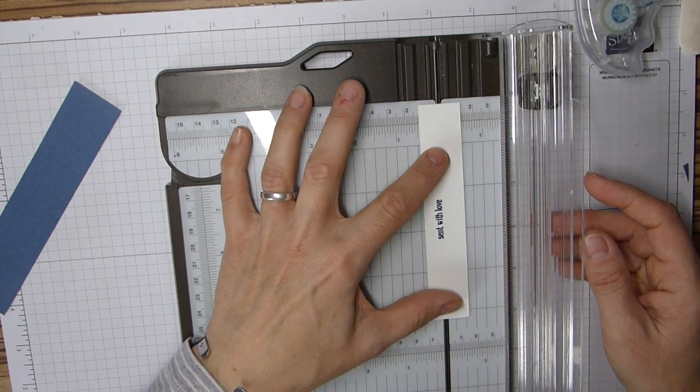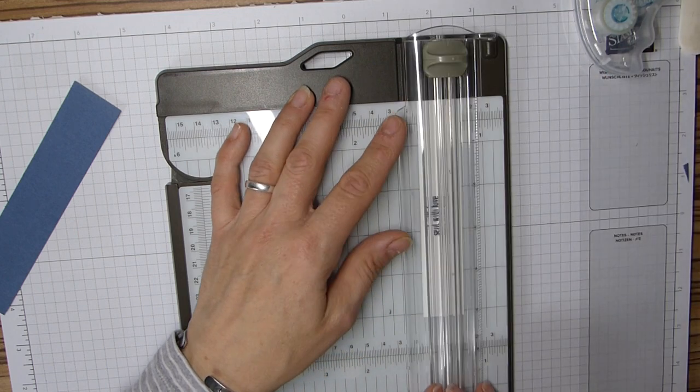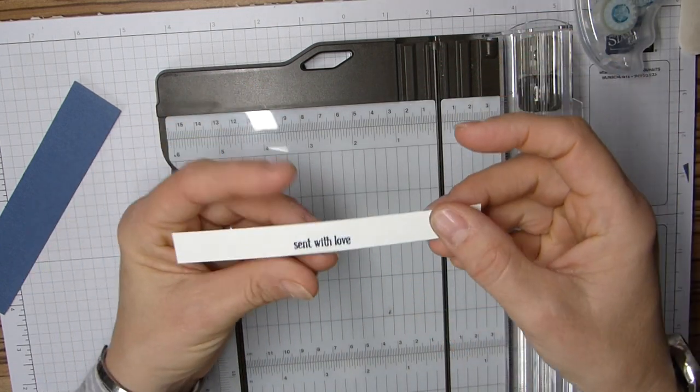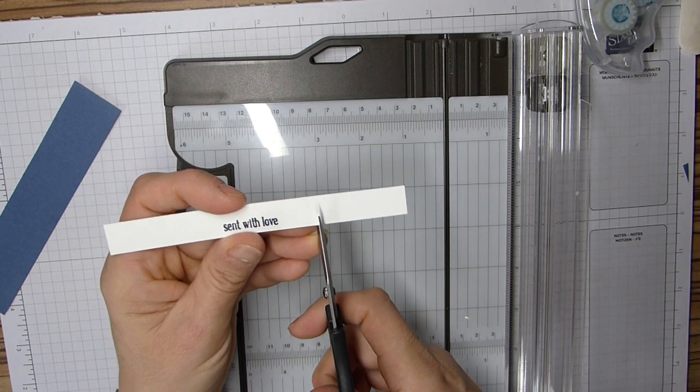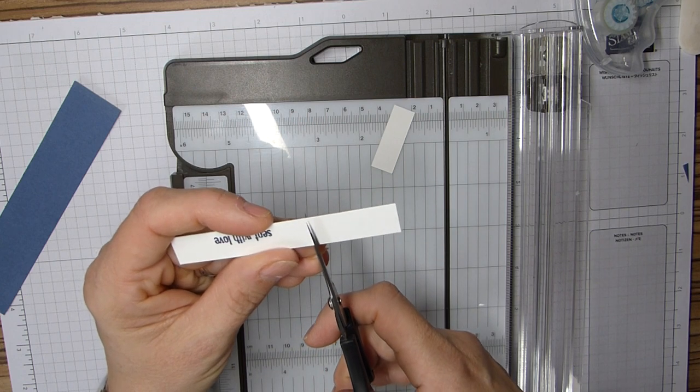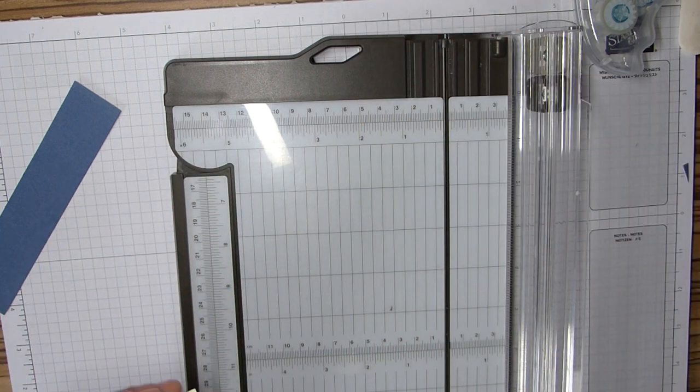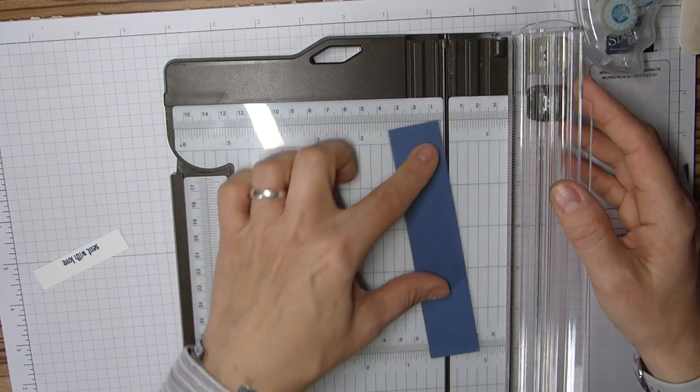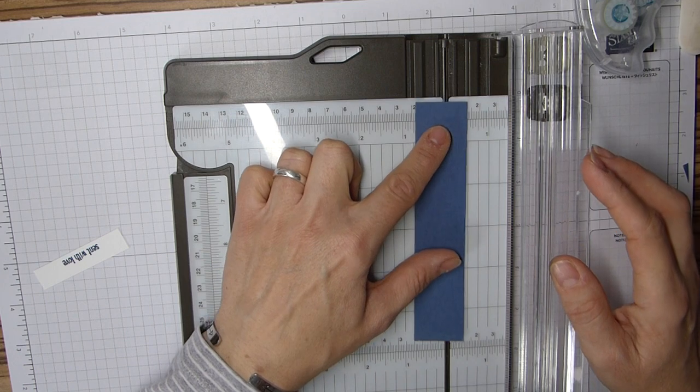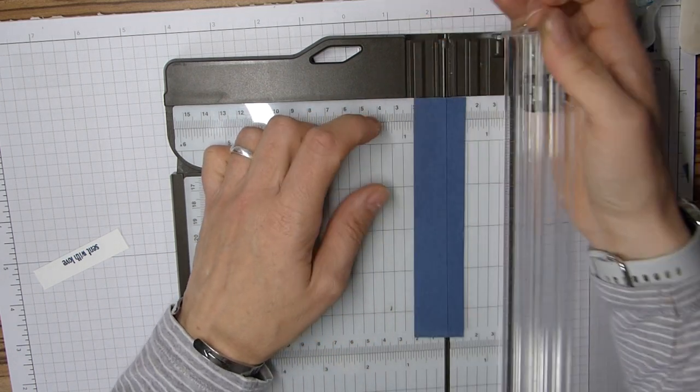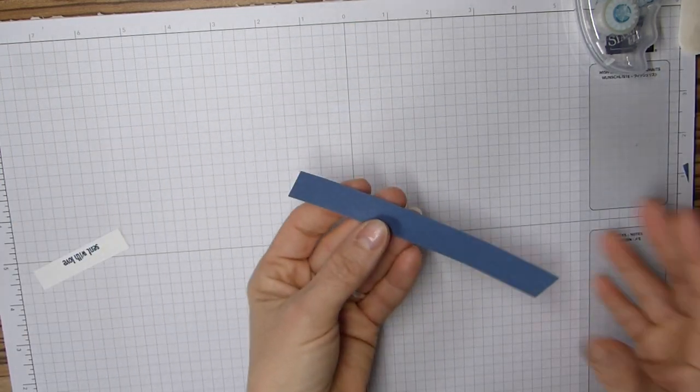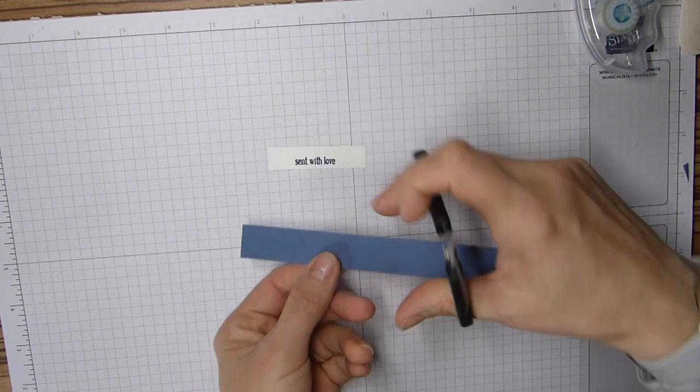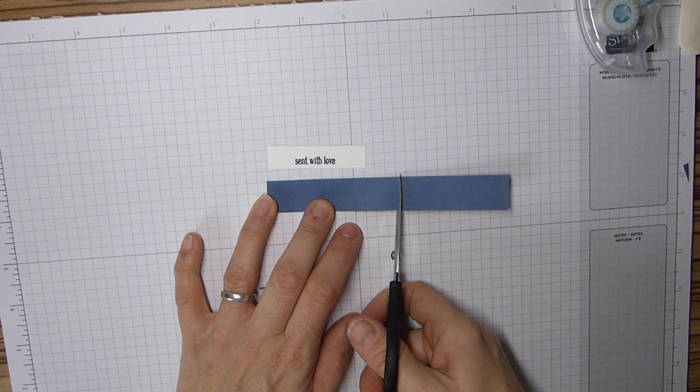I'm going to trim off these ends because I don't need it to be quite so long. And then while I've got it I'm going to do the Misty Moonlight at three quarters of an inch. That end wasn't straight that's why I've turned it round. So three quarters of an inch and that gives me the layering that I need. Then I'm going to trim this one down but I want it just to be a fraction longer.